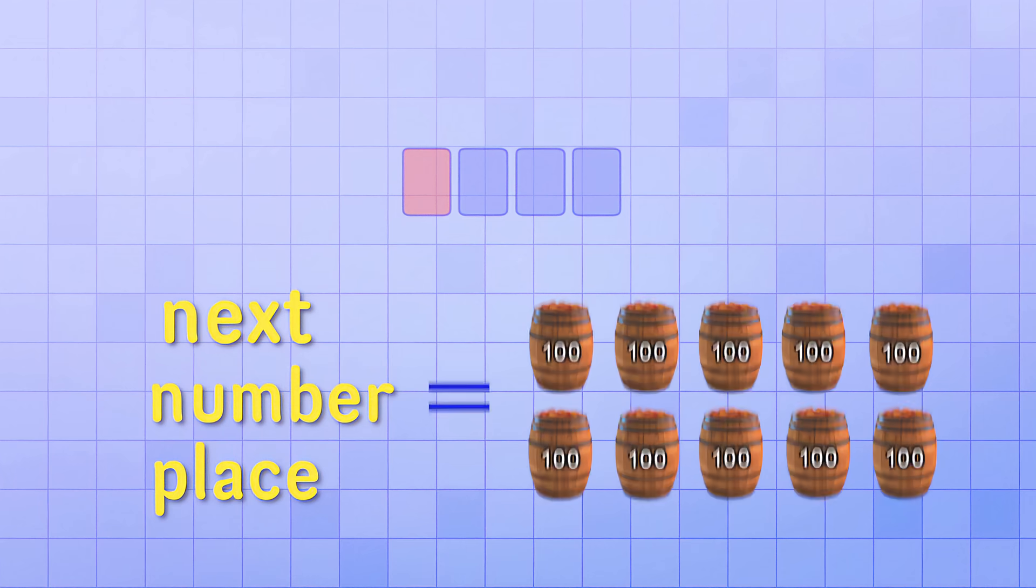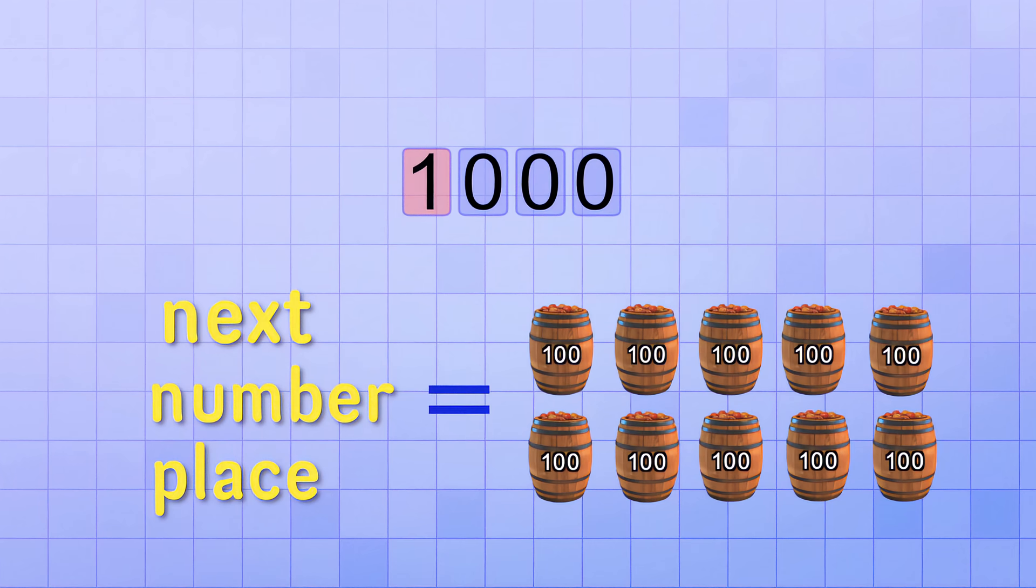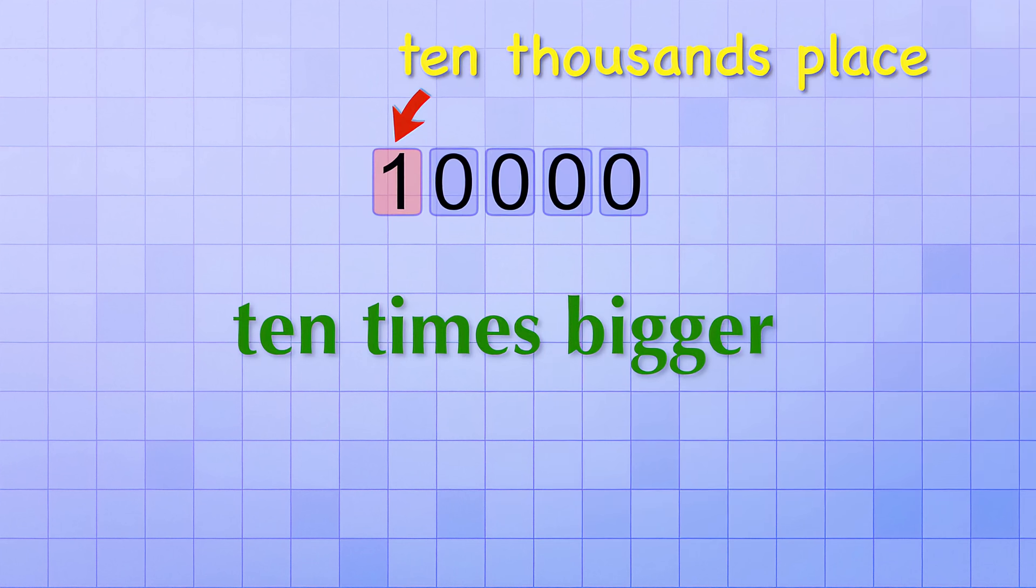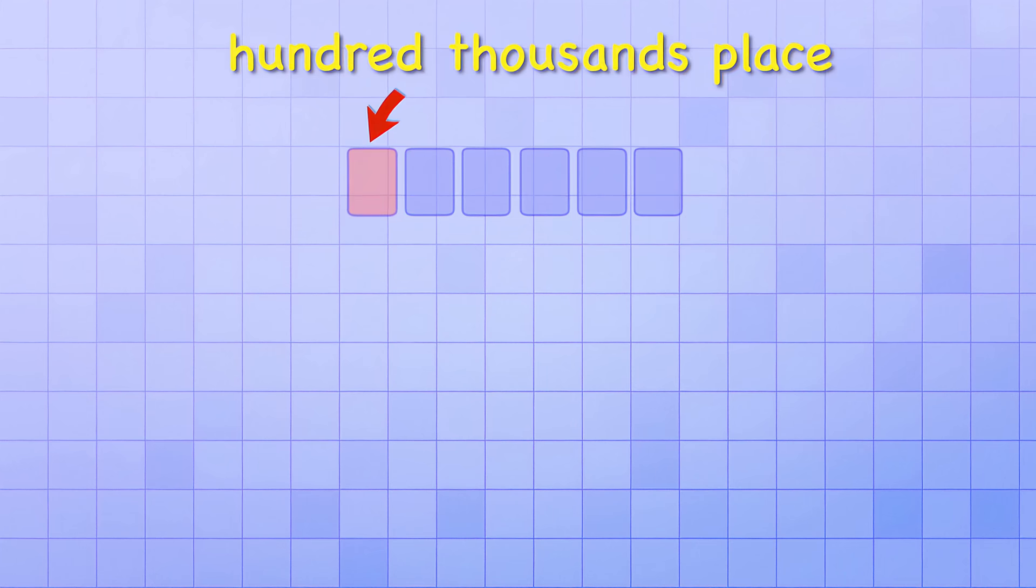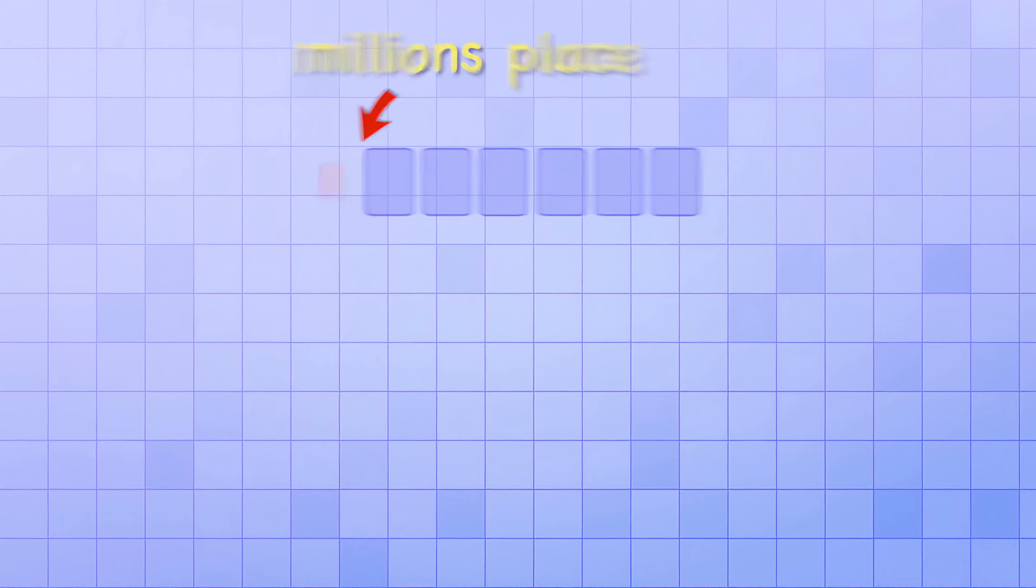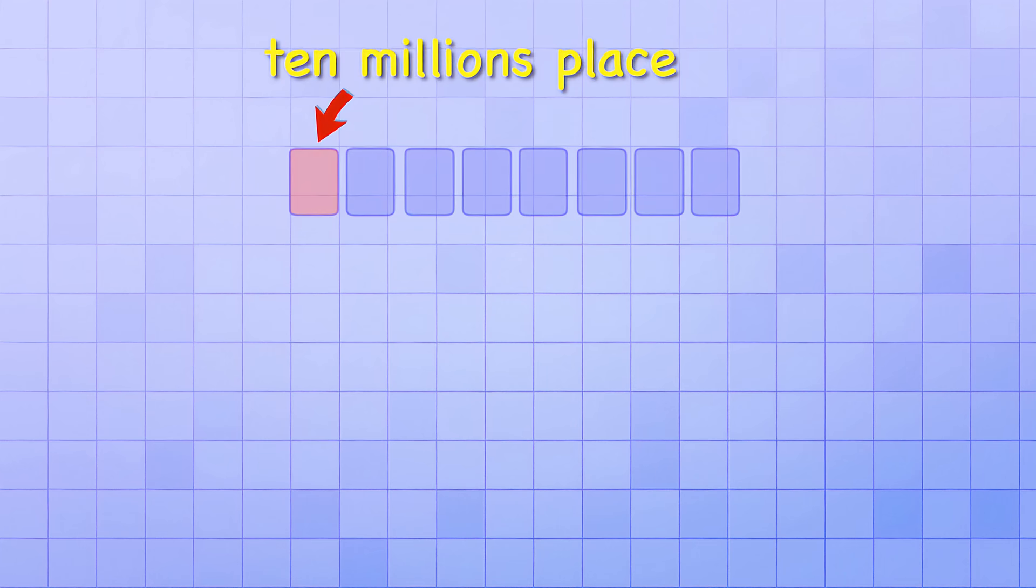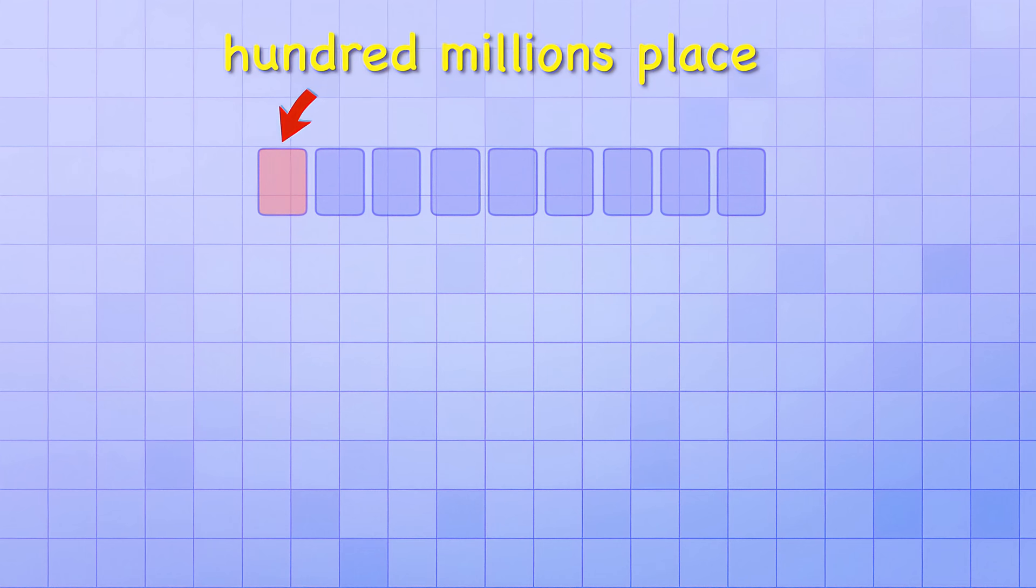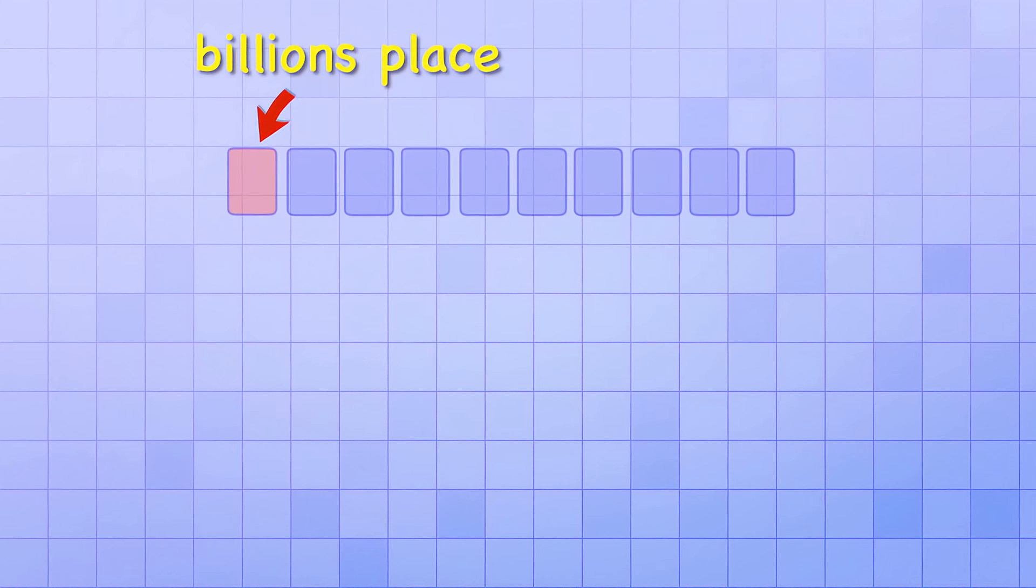It helps us to see that the next number place will count groups of 10 times 100, which is 1,000. That's why it's called the thousands place. And the next number place will count groups 10 times bigger than that. It's the 10 thousands place. And the number places keep on going like that. Next is the 100 thousands place. Then the millions place. Then 10 millions. Then 100 millions. Then billions. And so on.